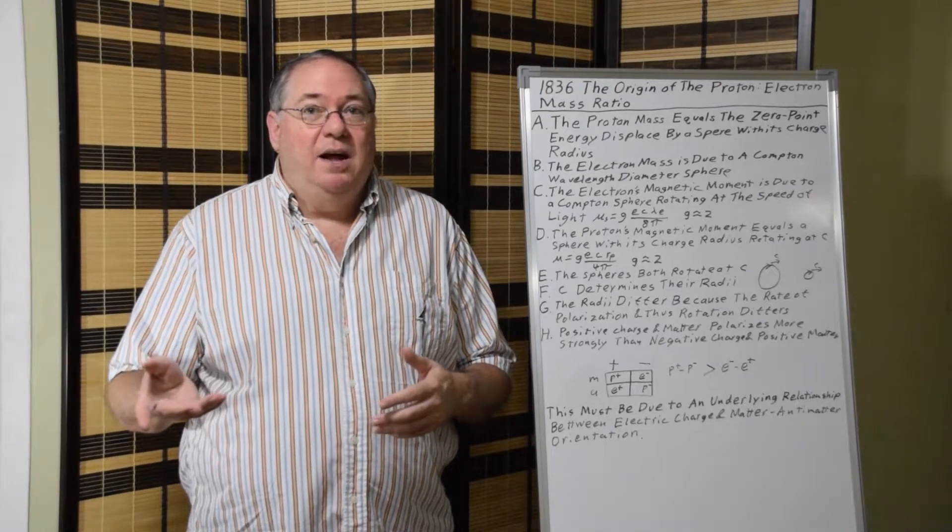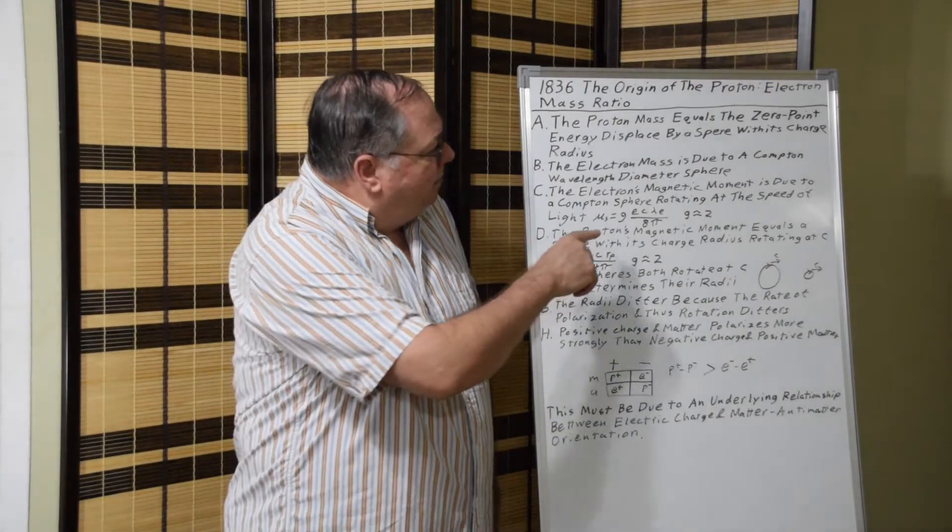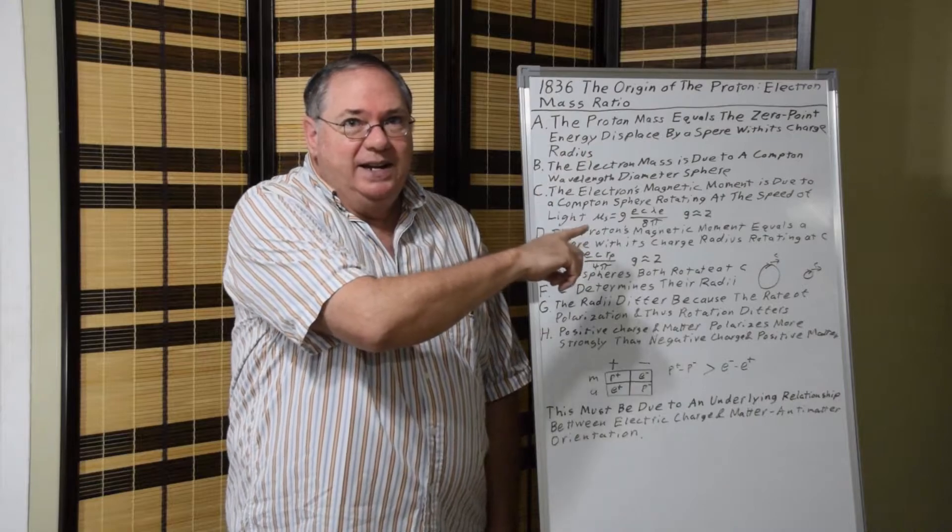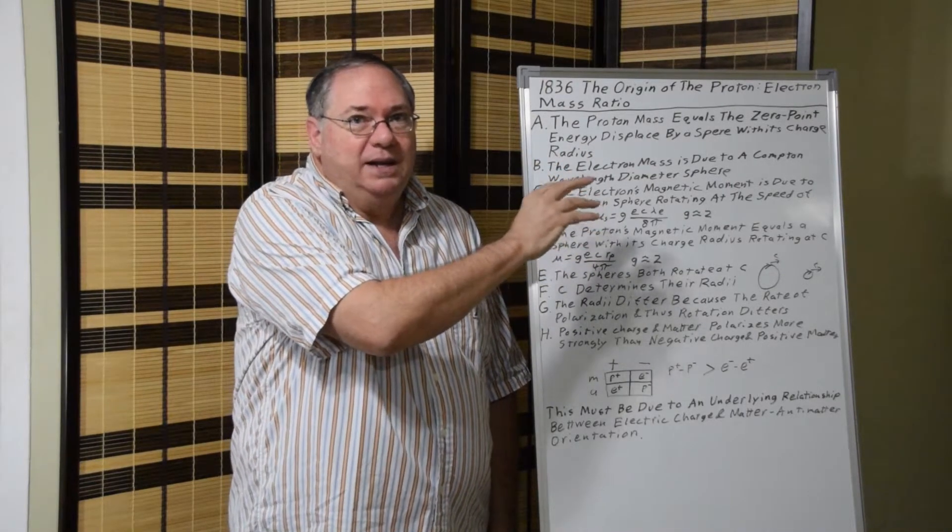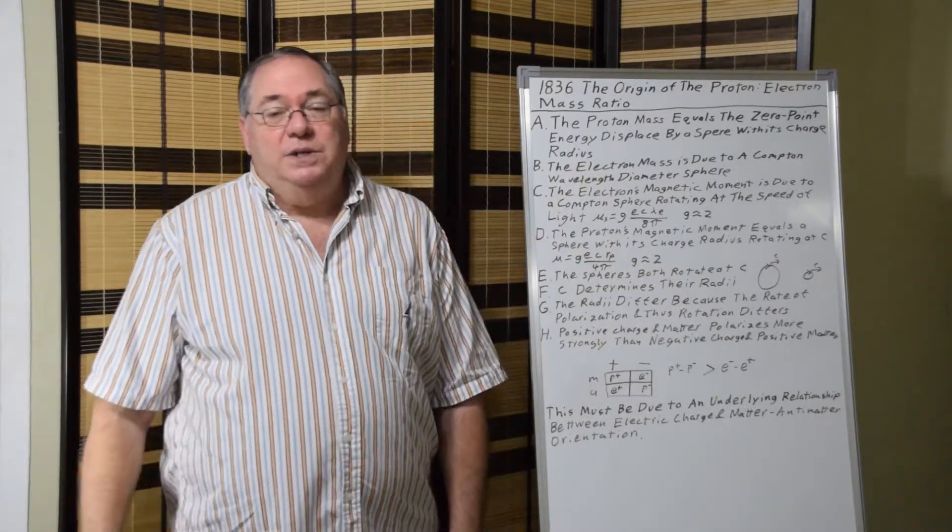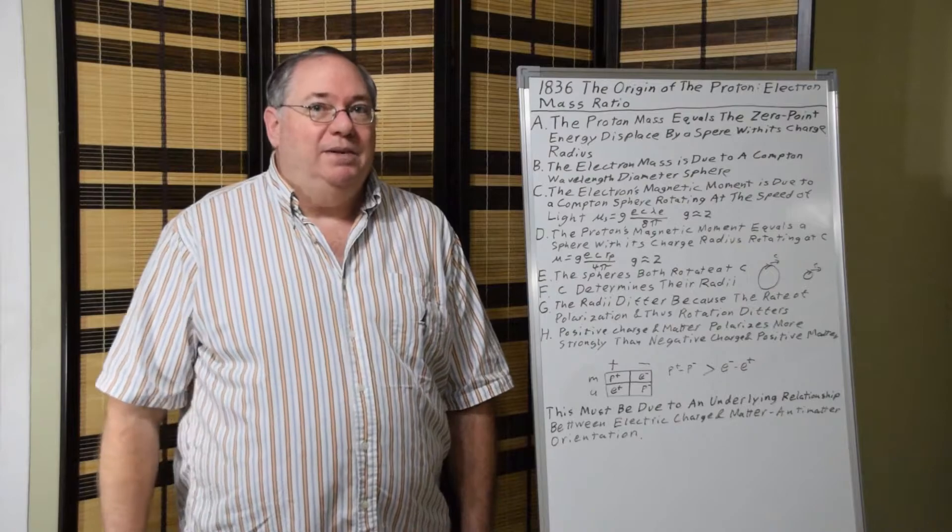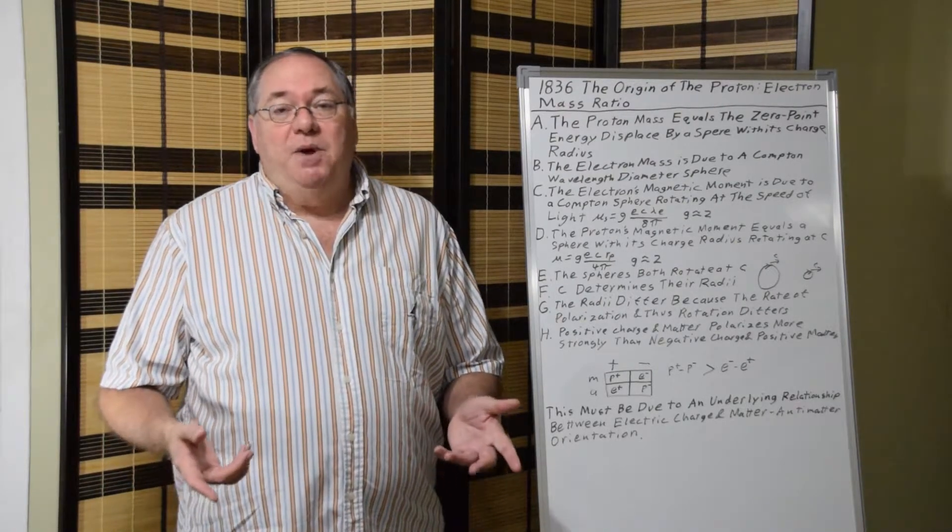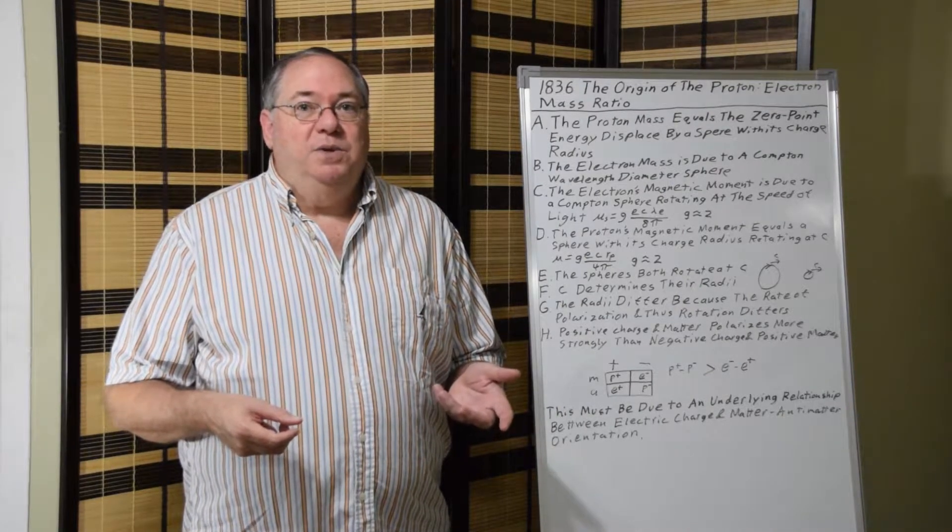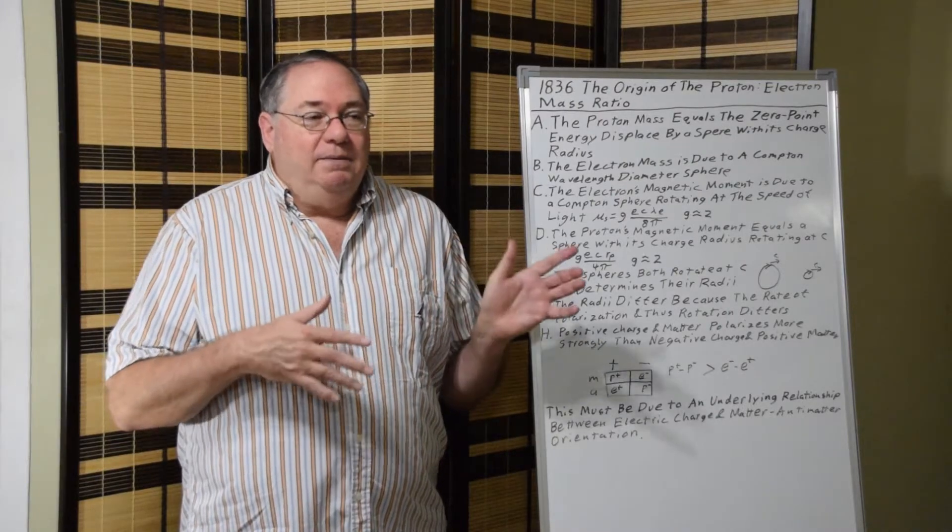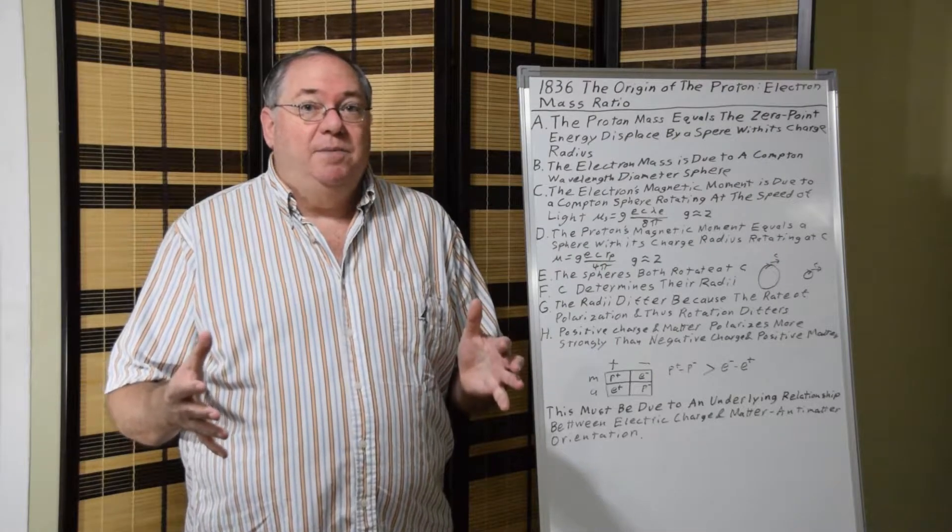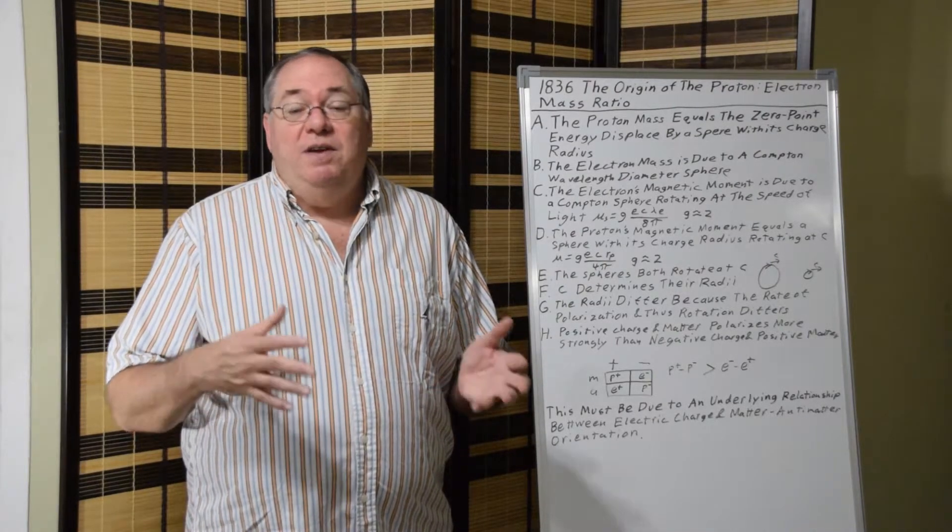We're basically, instead of using mass, we're effectively using the Compton wavelength. The magnetic moment is proportional to E, the charge, C, the speed of light, and then R, the radius, which is based on the Compton wavelength. And that's where the magnetic moment comes about. The proton's magnetic moment is equal to that formula at the charge radius, at the outermost charge radius. And the g-factor is 2.